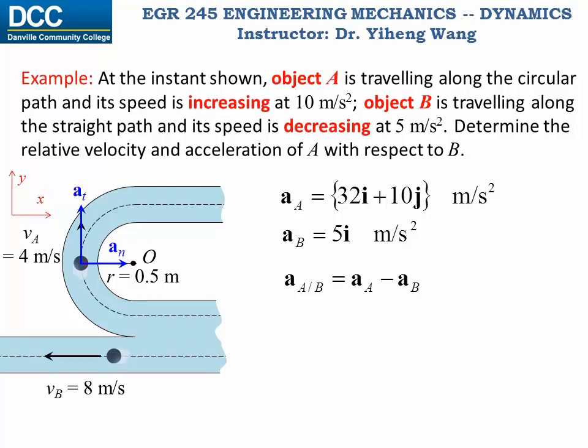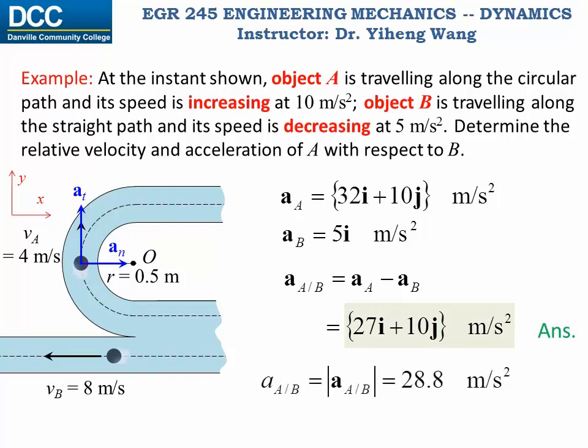And if we do the Cartesian vector addition-subtraction, this equals 27i plus 10j meter per second squared, and that is the answer in Cartesian form, or we can also find the magnitude to be 28.8 meter per second squared.